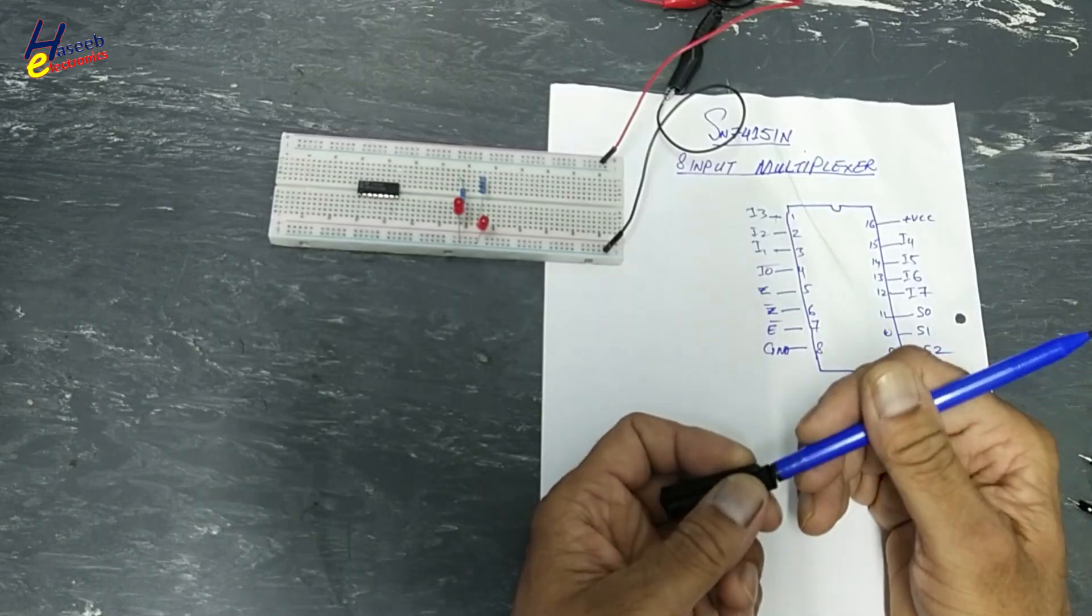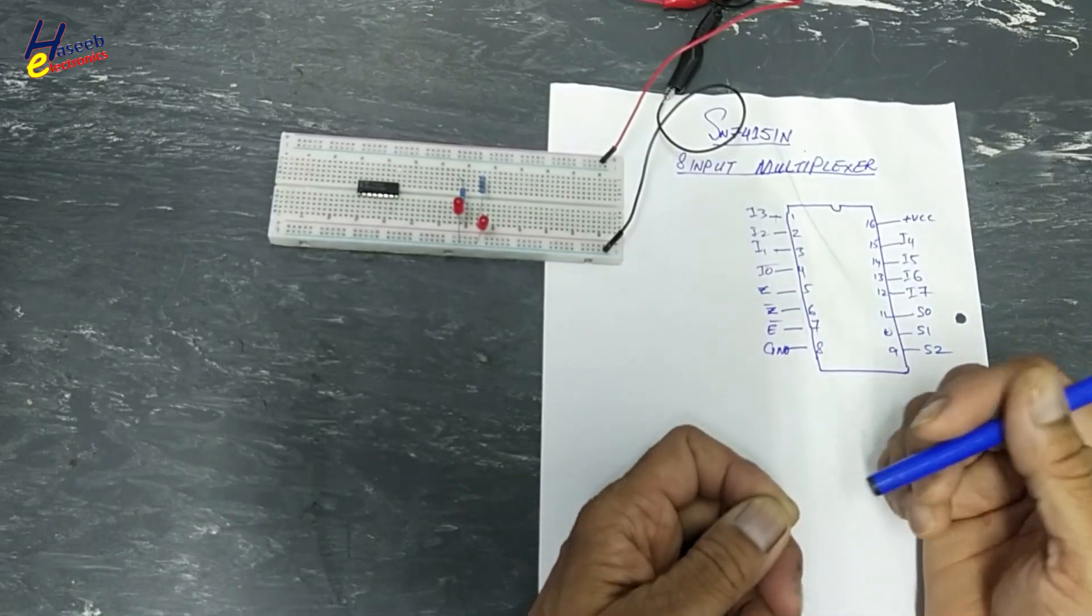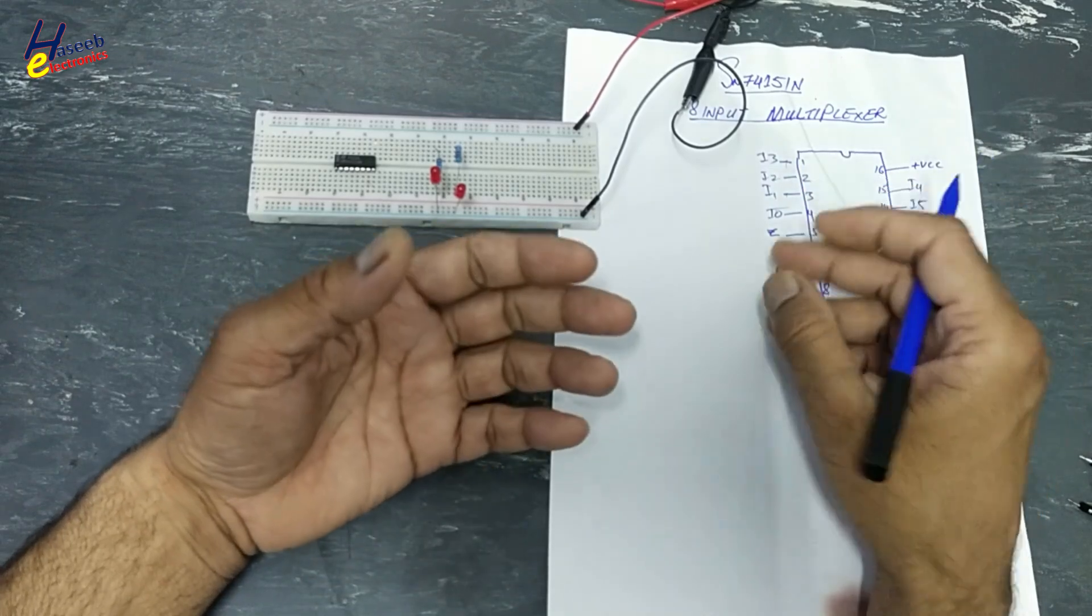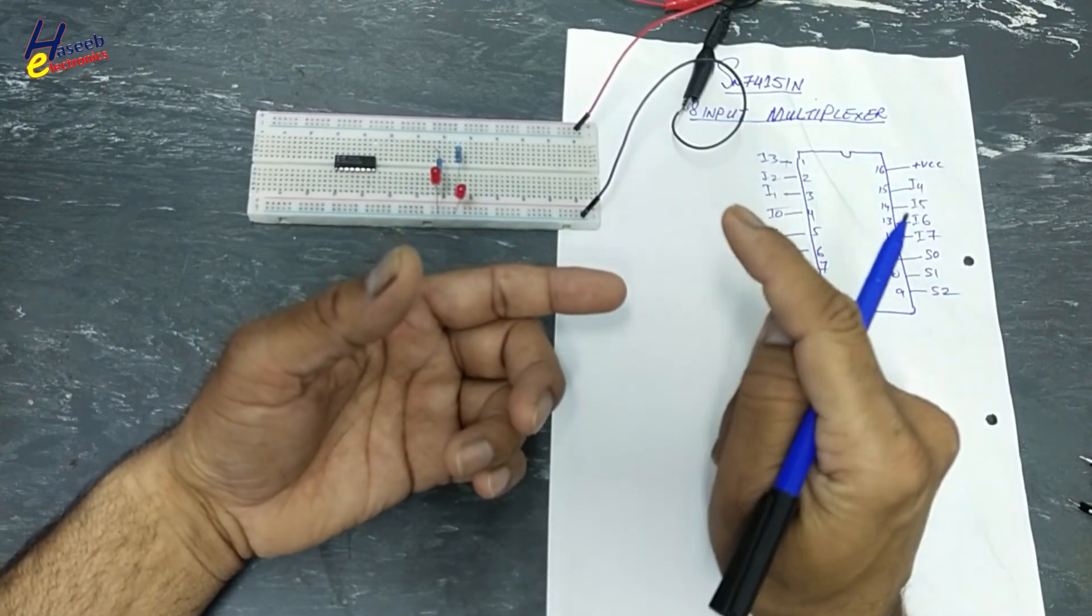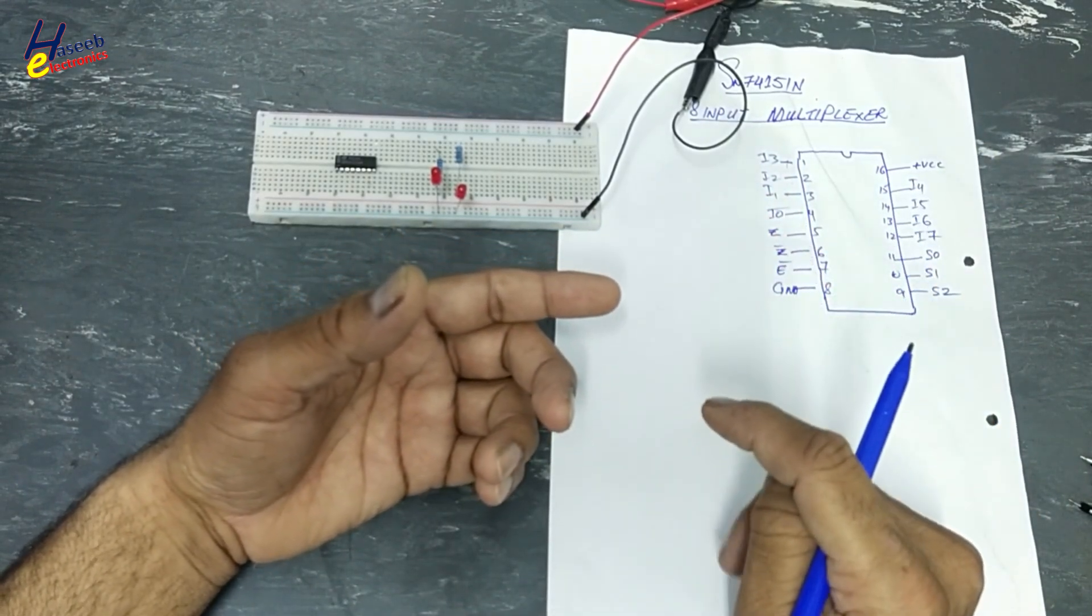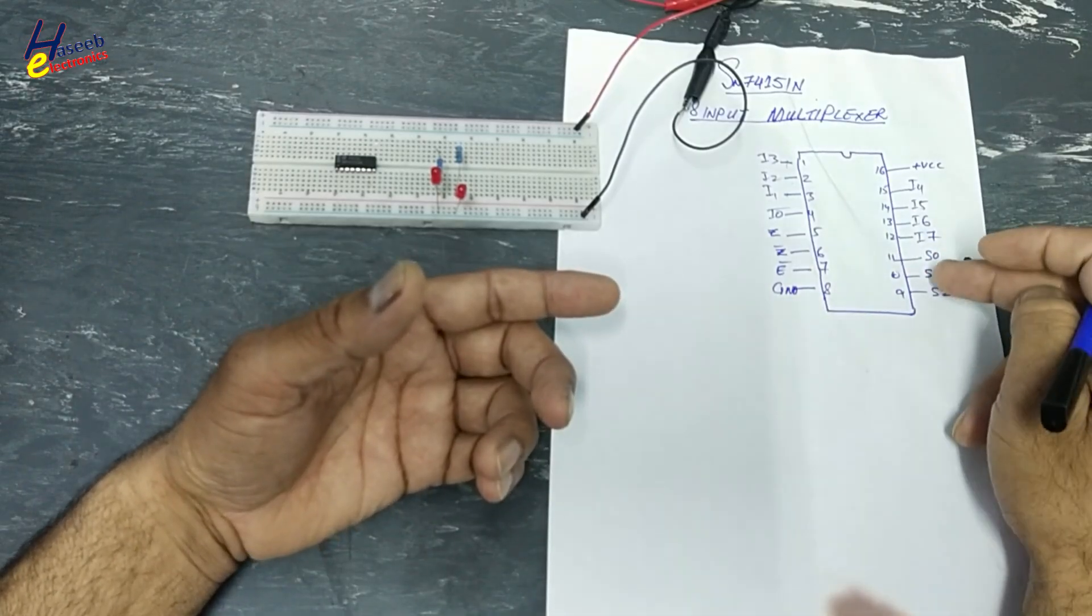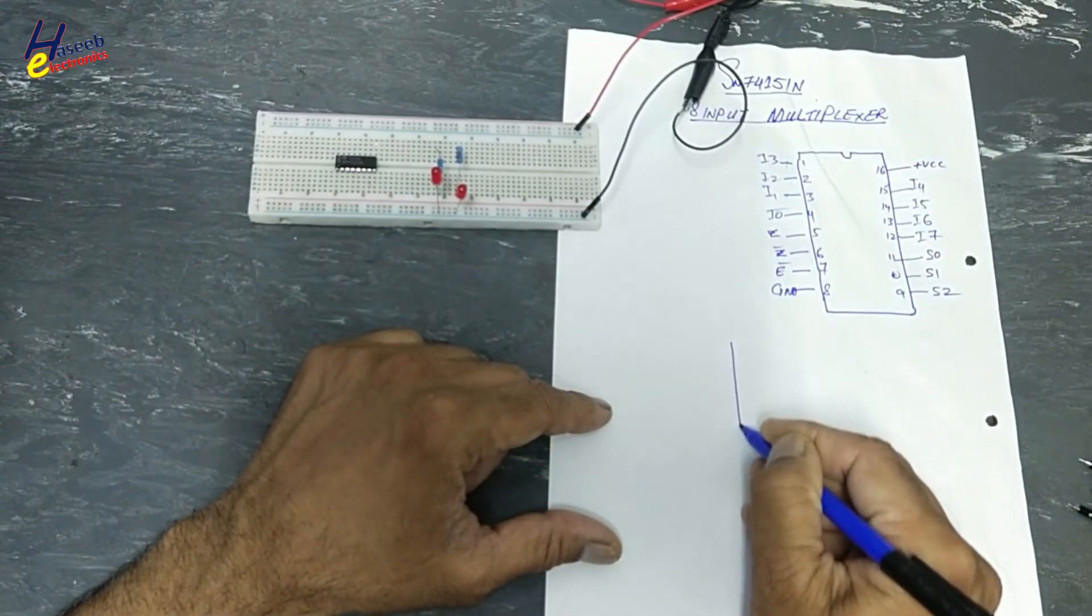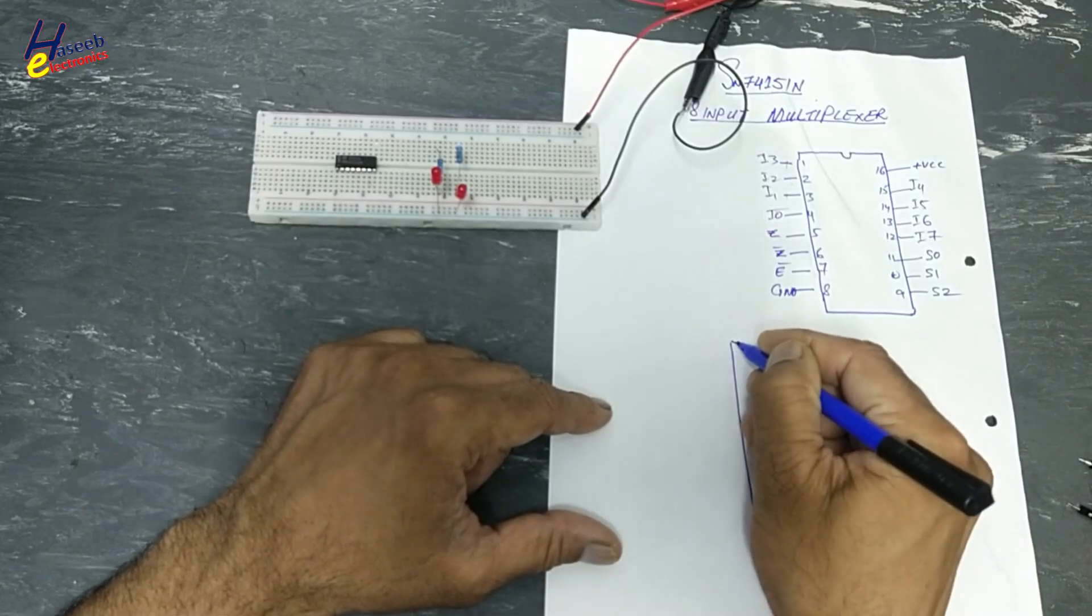It is TTL IC 16 pin. When any microcontroller, any CPU, any processor requires one signal out of eight signals to be connected at output.